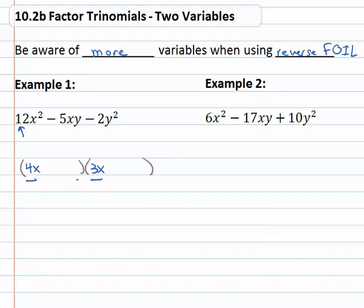Then we know that the last term times the last term has to multiply to the last term, the negative 2y squared, which means we need a y. The only way to get 2 is 2 times 1, so we might try 2 times 1 — but notice there's a GCF in that binomial. 4x and 2 are both divisible by 2, so that's bad. Let's switch the order and put 1 times 2.